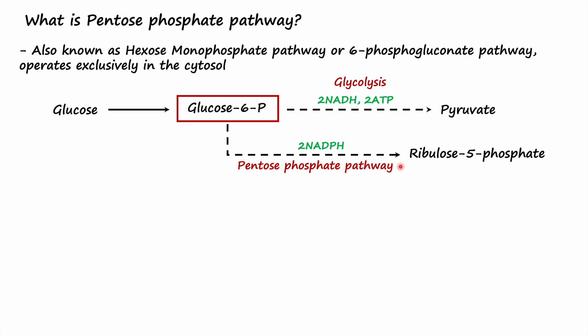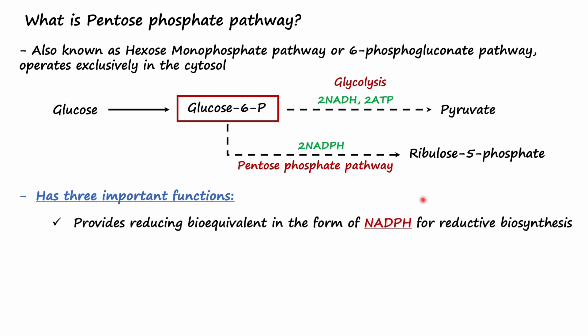In the pentose phosphate pathway, glucose 6-phosphate is oxidized to generate NADPH and carbon dioxide, and to synthesize ribulose 5-phosphate. This is only one phase of the pathway. It is also important to mention that no ATP is directly consumed or produced in the cycle. The pathway has three main important functions: first, it provides reducing equivalents in the form of NADPH for reductive biosynthesis such as fatty acid and steroid synthesis.